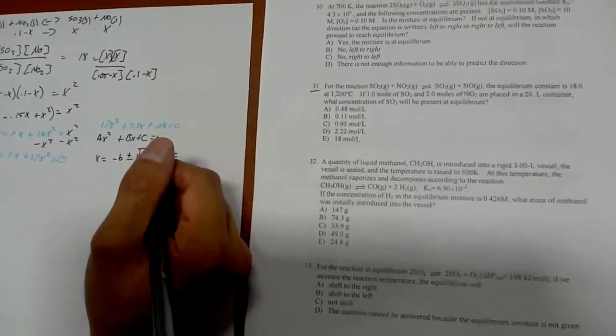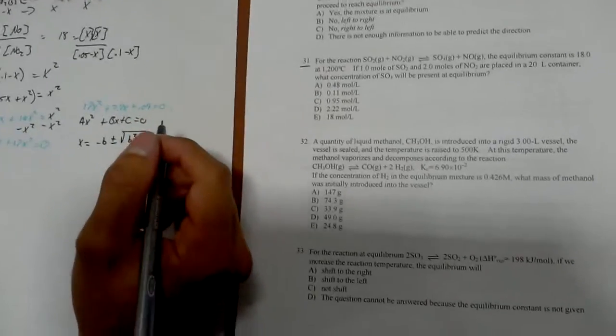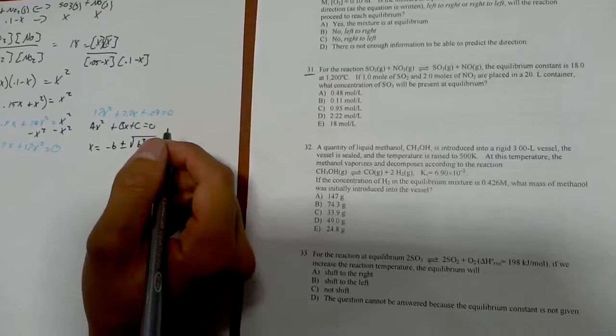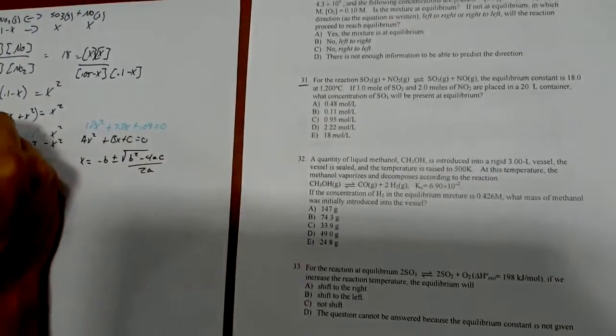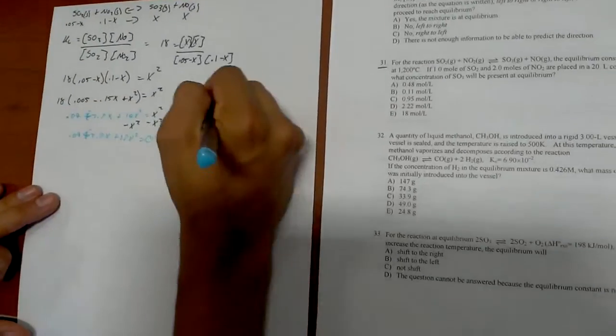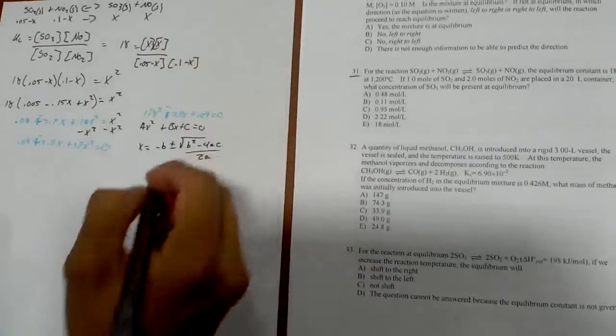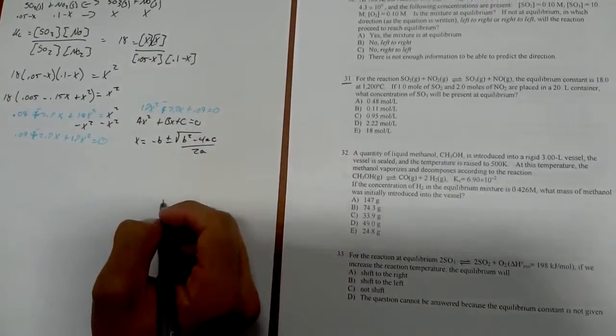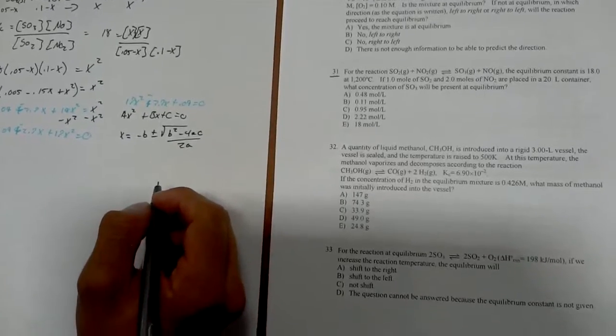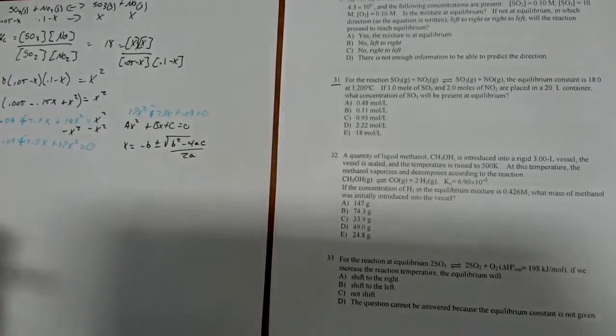Now next what we're going to do is—oh I'm sorry this is a negative by the way, I don't know why I wrote this. The 2.7x is negative so keep that in mind, that's important to how we solve this.